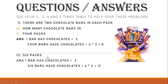Next one is six packs. If you have six packs, how many chocolate bars will you get? One bar has two chocolates, so six packs have six times two, which equals twelve. The next two questions are also similar — if you are getting the idea, show me your thumbs up.